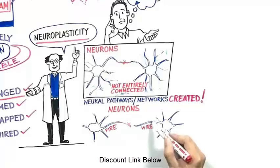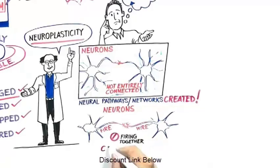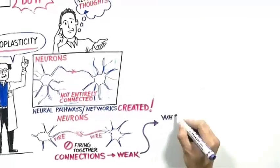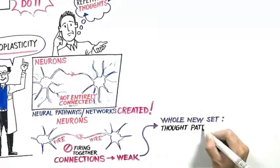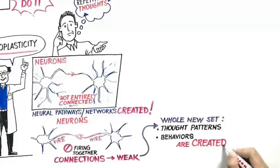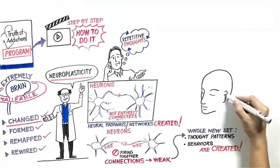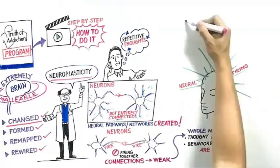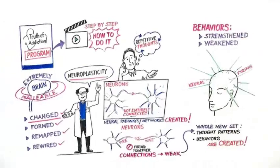These neurons that fire together, they wire together. But it's also true that when neurons stop firing together, the connections between them become weak and a whole new set of thought patterns and behaviors can be created. Through neural firing, behaviors are either strengthened or weakened.